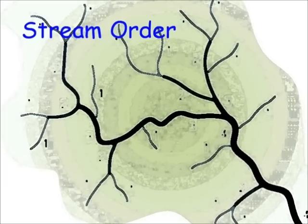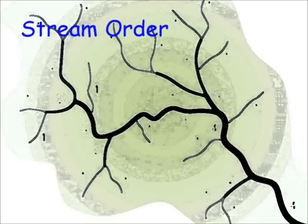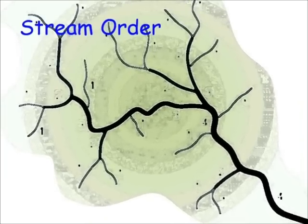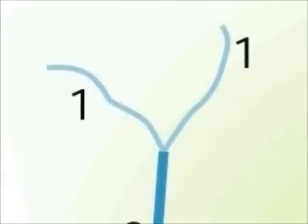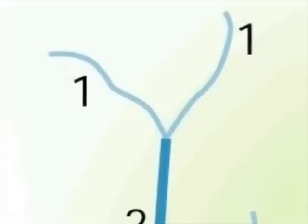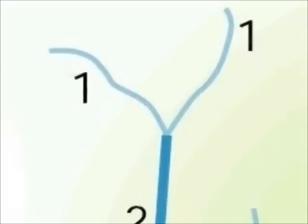The stream ordering system starts with first order streams. First order streams are the smallest streams that might appear on a map. When two first order streams join, they form a second order stream. Second order streams are considered to be larger than either of the two first order streams because both first order streams contribute to the second order stream.